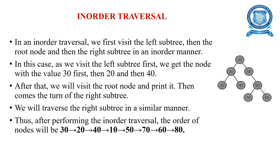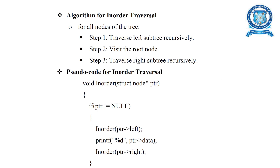In in-order traversal, we visit the left sub-tree first, then the root node, then the right sub-tree. In the diagram, the traversal order is: 30, 20, 10, 40, 10, 50, 70, 60, 80. This is the order of in-order traversal.